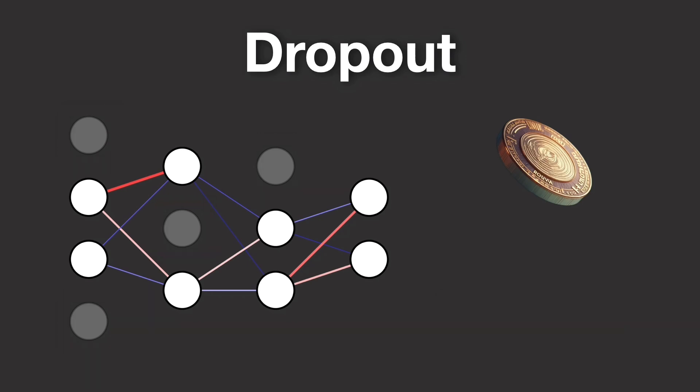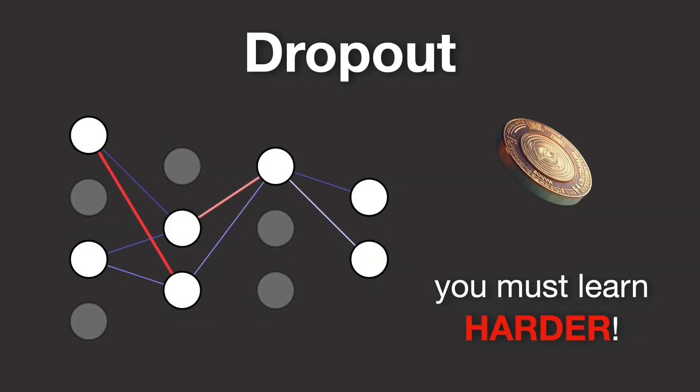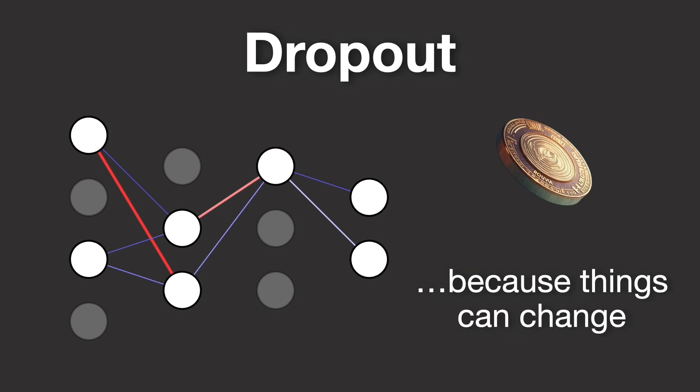This creates a thin network, a smaller version of the full network, that changes on every training example. The beauty of this approach is that it forces every neuron to learn robust features. Since any neuron might be dropped out on any given pass, the network can't rely on the presence of specific neurons to make accurate predictions, and instead, each neuron has to contribute meaningful information on its own.